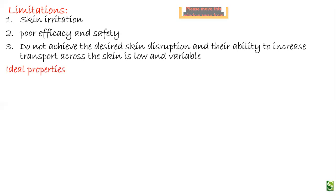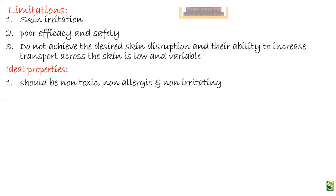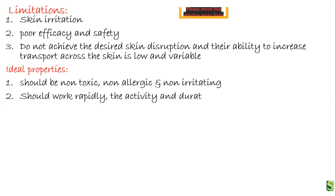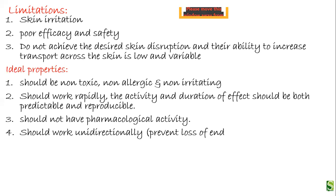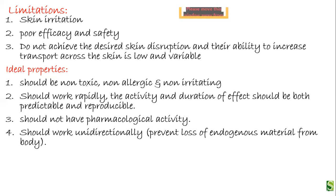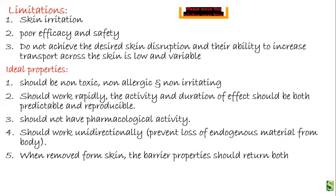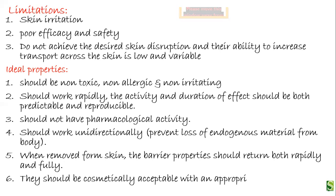In order to use any chemical enhancer, it should have some ideal properties. Most importantly, the chemical enhancer has to be non-toxic, non-allergic, and non-irritating. It should work rapidly. The activity and duration of the effect have to be both predictable and reproducible. It should not have pharmacological activity and should not cause its own therapeutic effect. It should work unidirectionally — that is, only the one-sided barrier property has to be disrupted, meaning exogenous material should only come into the system and internal substances should not leave the system, preventing loss of endogenous material. When removed from skin, the barrier properties should be regained rapidly and fully. They should be cosmetically acceptable with an appropriate skin feel.